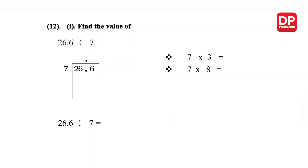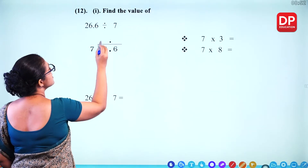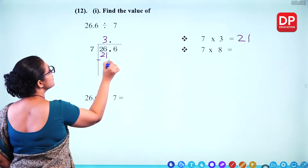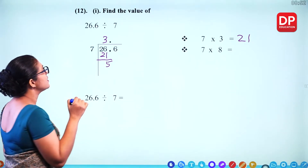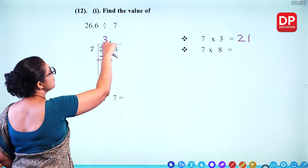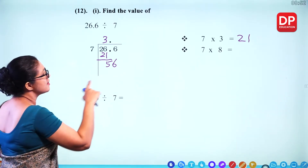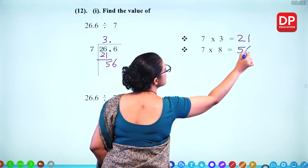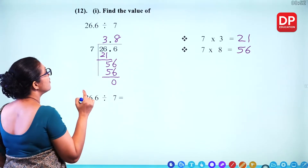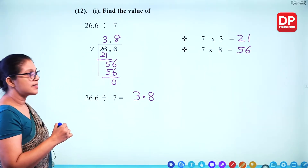Find the value of 26.6 divided by 7. How many 7s for 26? 7 times 3 is 21, remainder 5. Align the decimal point. Take 6: for 56, 7 times 8 is 56, remainder 0. So the answer is 3.8.